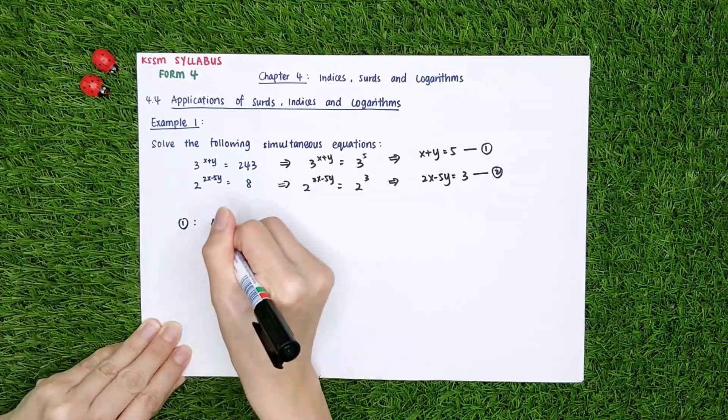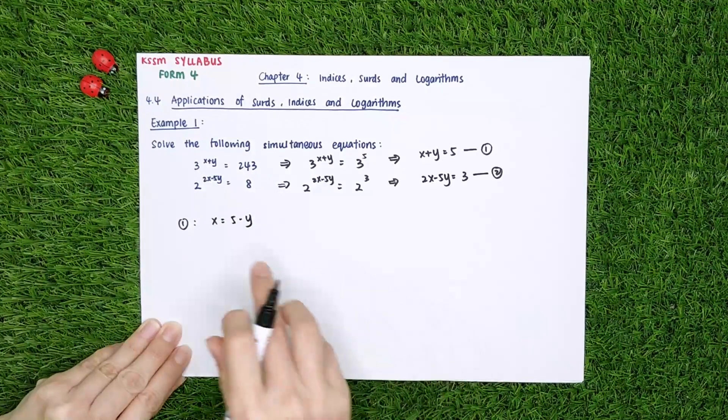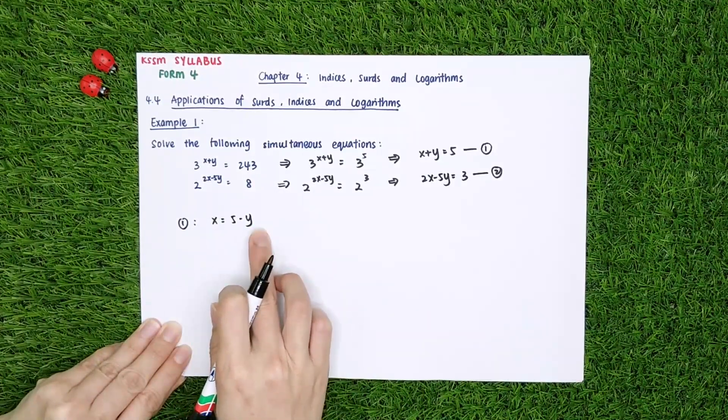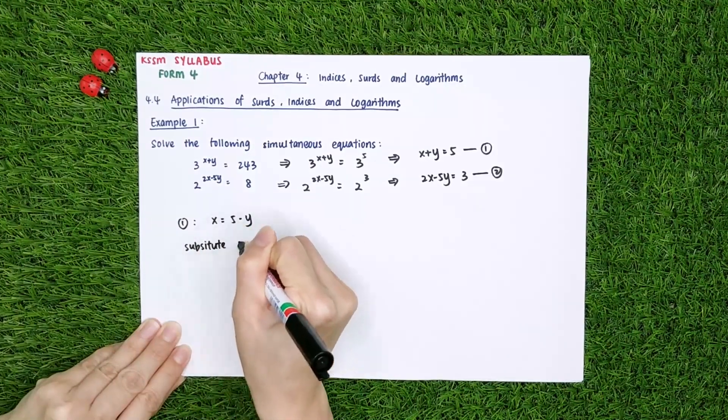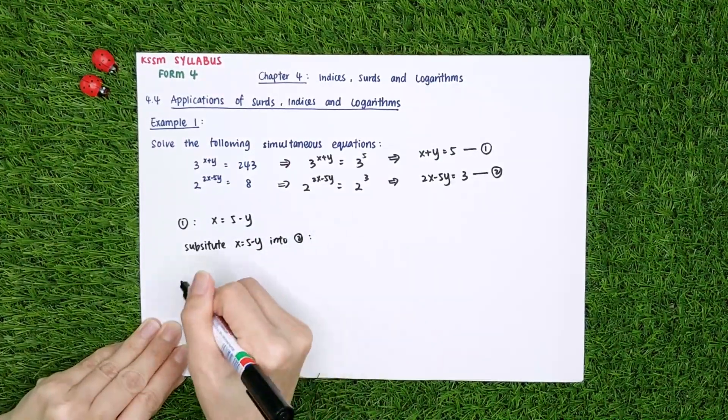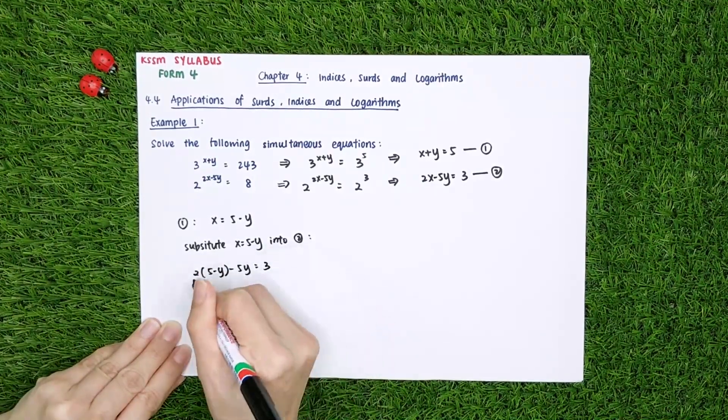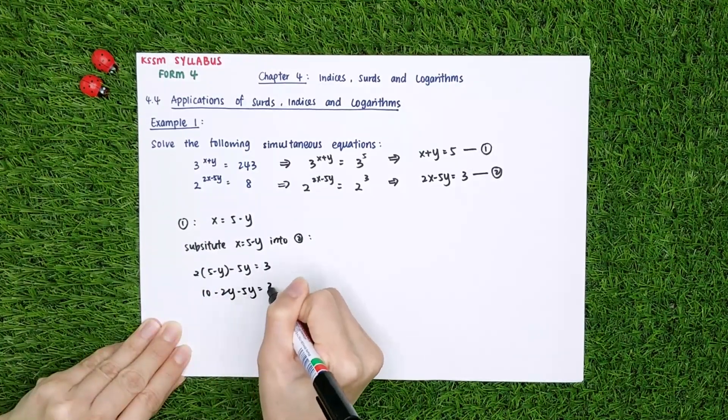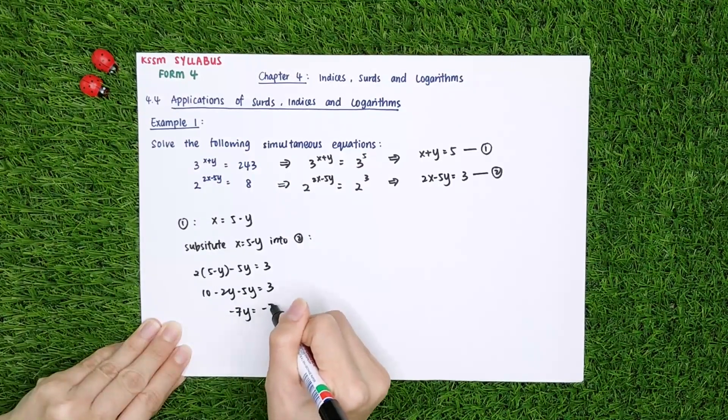From the first equation, I can change it become x equals to 5 minus y. Then I substitute the x equals to 5 minus y into the second equation. So 2 times 5 minus y minus 5y equals to 3. 2 times 5 equals to 10. Minus 2y minus 5y equals to 3. Here you will get minus 7y equals to minus 7.